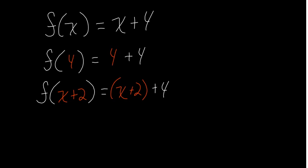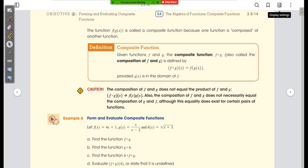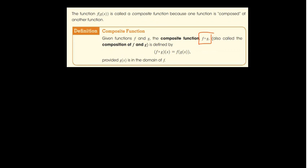Instead of evaluating the function at a value, you're going to evaluate a function at a function. The notation is f composed with g — written f of g of x — and that equals f of g of x. We call this the composition of f and g.